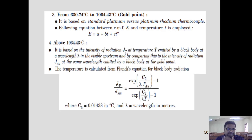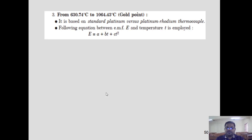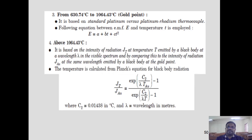For temperatures above 1064.43°C, pyrometers are used. The measurement is based on the intensity of radiation emitted at temperature T by a black body at wavelength λ. Using the empirical Planck equation, we can get the temperature. These are the different temperature ranges and the corresponding types of thermometers to use.